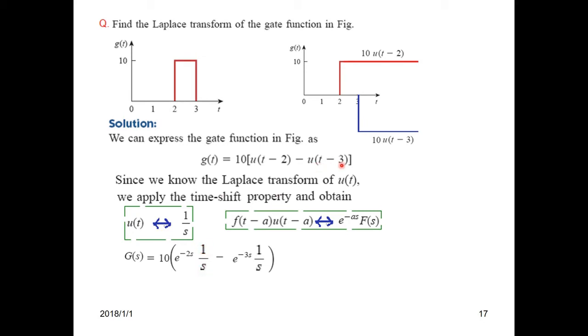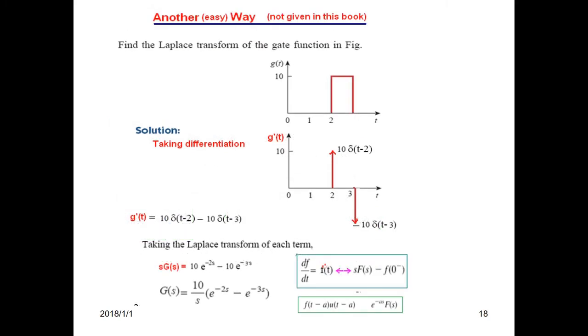Similarly, in the second case, it is minus e^(-3s) times 1/s because it is shifted by 3. So, simplifying, this gives us G(s). This question can be done by another way if we